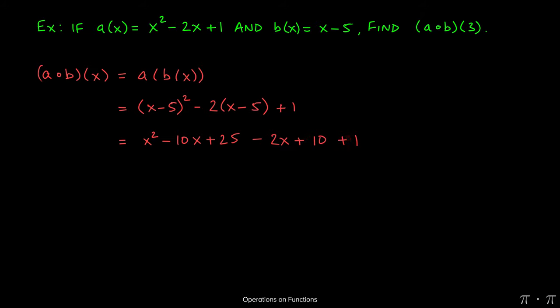At this stage we can look for like terms. So we have -10x and -2x. That's going to give us -12x. And then we have 25 + 10 which is 35, plus the 1 is 36. And that's exactly what we have: x² - 12x + 36. So that's essentially our composition function. (a∘b)(x) = x² - 12x + 36.